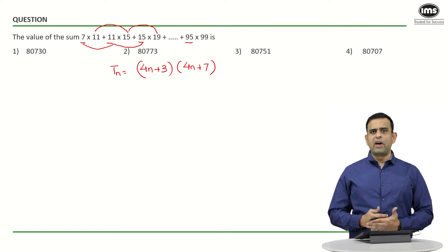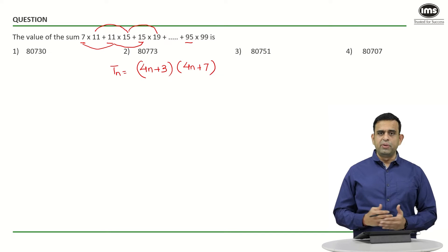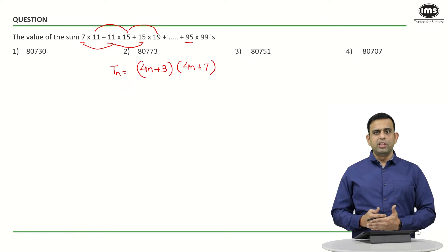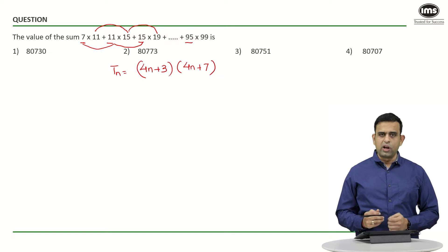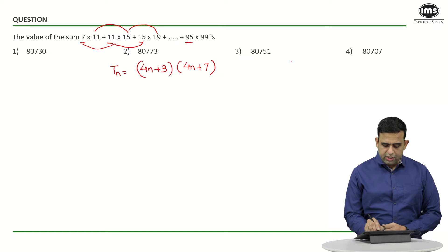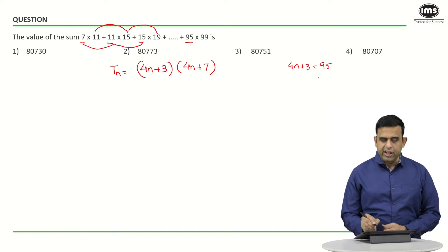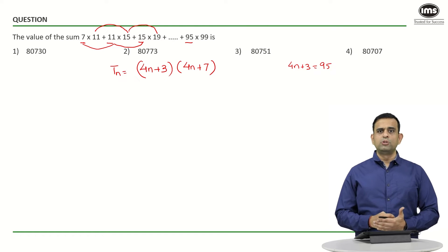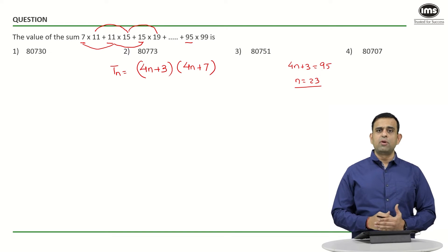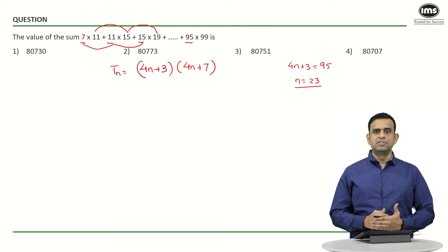Now, once we know tn we can simplify it as a quadratic in n plus a constant. We also need to figure out how many terms there are. If we set 4n + 3 = 95, then 4n = 92, giving n = 23. So we need to find the sum of 23 terms.